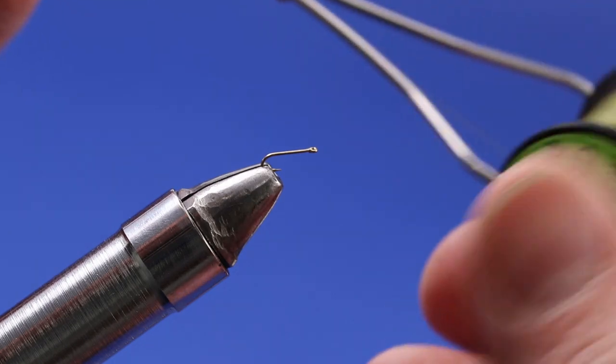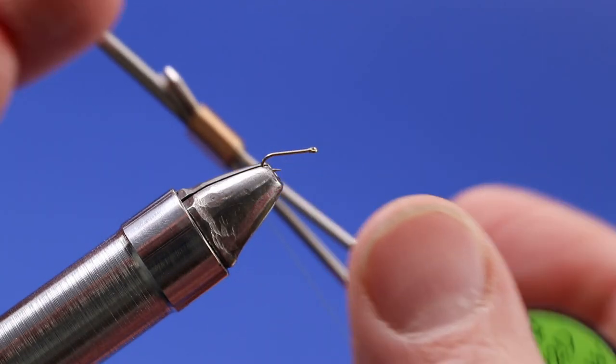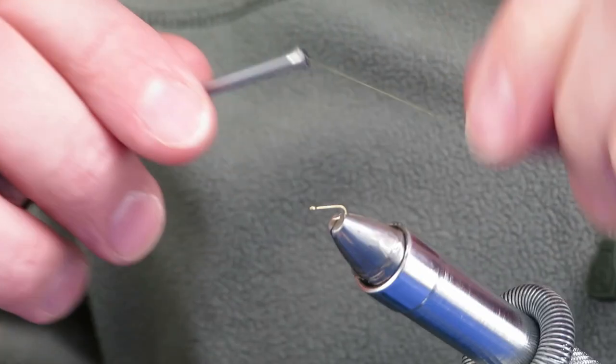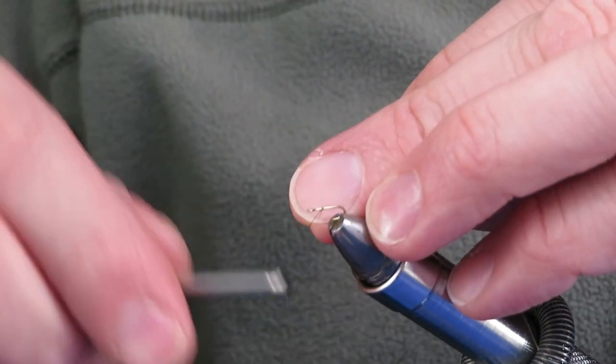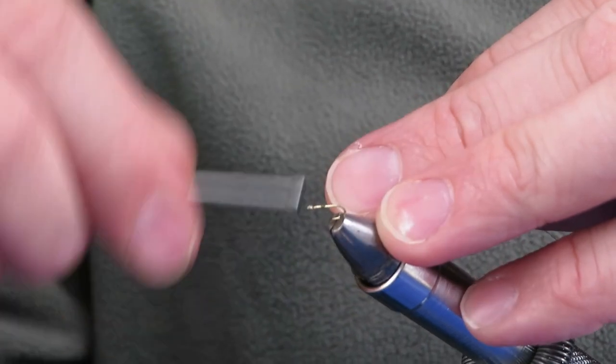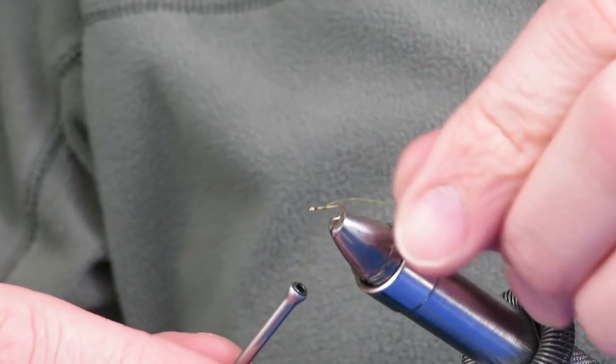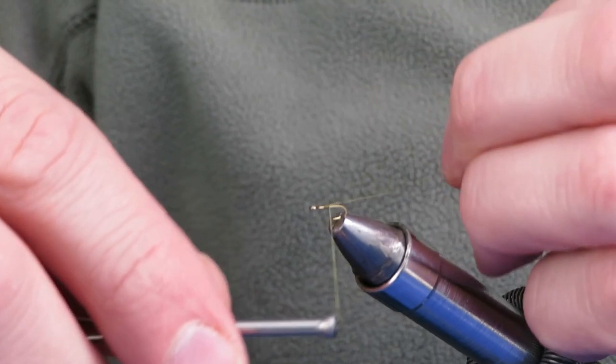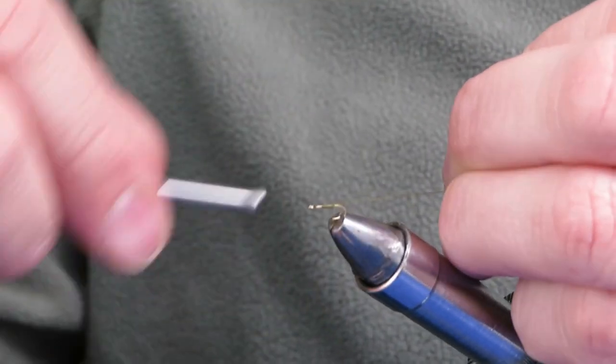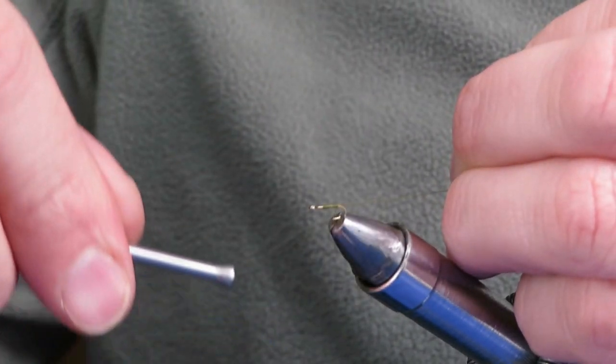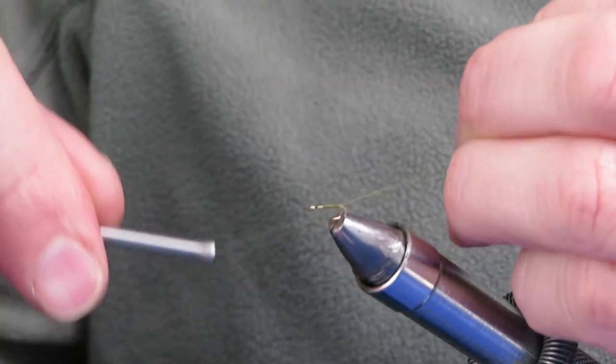To start off, I've got some A.D.O.T Olive Uni-thread and I'm going to start my thread wrap maybe one or two eye-links back here. I'm not going to snip or break my tag end, I'm just going to hold moderate tension on it as I wrap back, keeping it on top in the middle of the hook there.